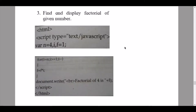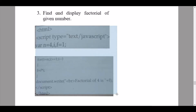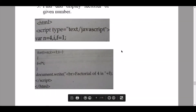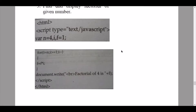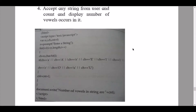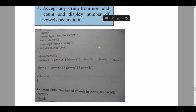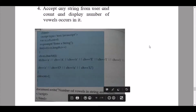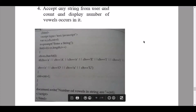Question 3: find and display the factorial of a given number — this is an important code, please try it out so you get a better understanding. Question 4: accept any string from the user and count and display the number of vowels occurring in it. The code has been given — please write it out carefully.